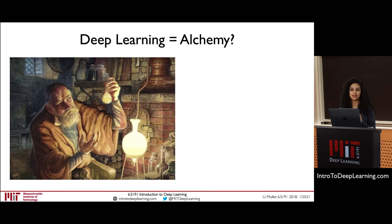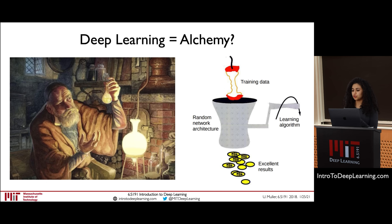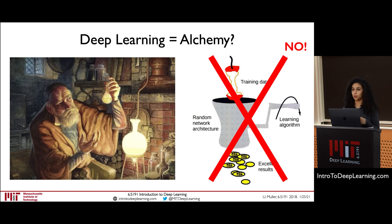There can be a conception, amplified by the media, that deep learning is basically alchemy — a magic cure that can be applied to any problem. The idea that you can take some training data, apply a network architecture, turn the crank on your learning algorithm, and spit out excellent results. But that's simply not how deep learning works. Your model is only going to be as good as your data. As the adage goes: if you put garbage in, you're going to get garbage out.